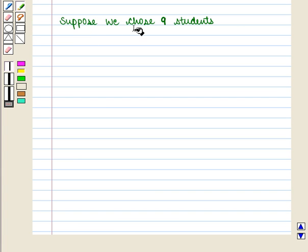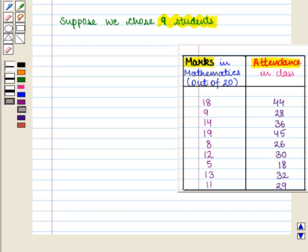Suppose we chose 9 students. Then we noted their attendance and marks in mathematics and we got this table. Here we can see that we have two series.